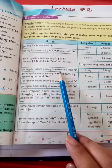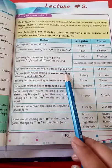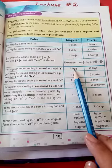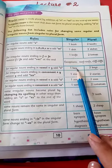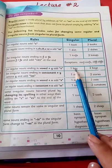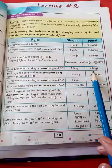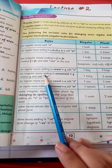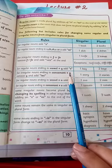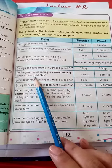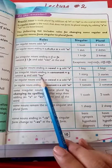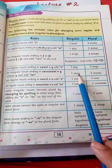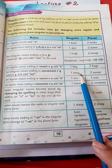For regular nouns ending in a vowel plus y, add -s. For example, boy — since o is a vowel before y — becomes boys. For irregular nouns ending in a consonant plus y, remove the y and add -ies. For example, story becomes stories.